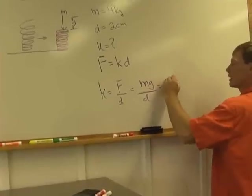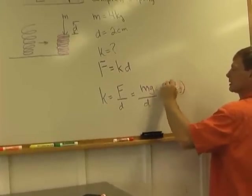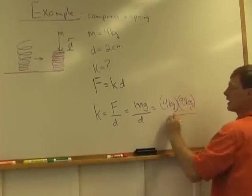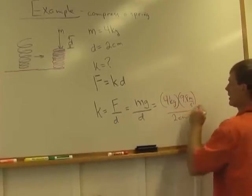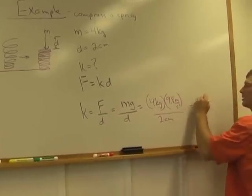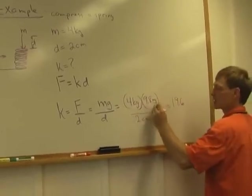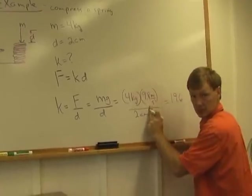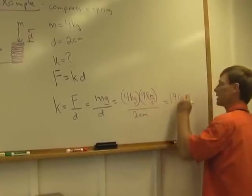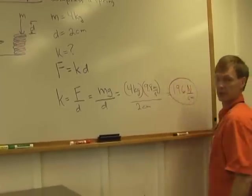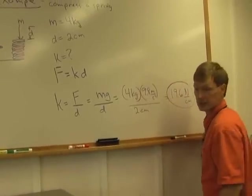And so I've got 4 kilograms times 9.8 meters per second squared divided by 2 centimeters. And that's going to give me 19.6 kilogram meters per second squared. Kilogram meter per second squared, that's a newton. That's force. And I'll just say newtons per centimeter.